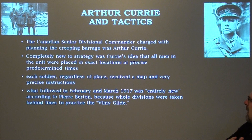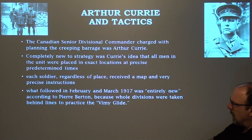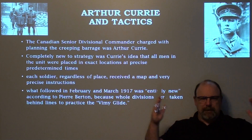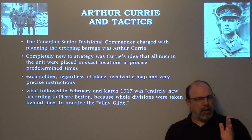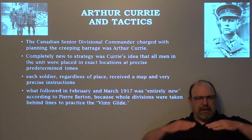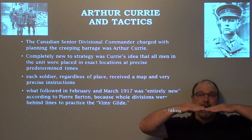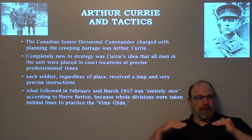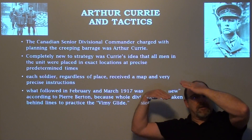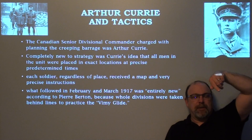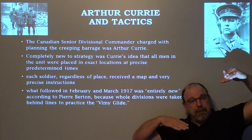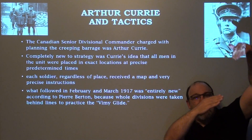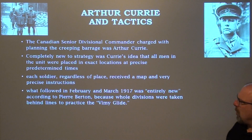In February and March 1917, what followed was entirely new. According to Pierre Berton, whole divisions were taken behind lines to practice what came to be known as the Vimy Glide. With four divisions lined up across the width of Vimy Ridge, instead of all troops going over the top simultaneously, the plan was for Division One to advance first, then the second, then the third — sweeping in sequence. The Germans on top, seeing troops flanking from one side, would shift to confront them — exposing themselves as the other divisions swept up. It was like a glide, and it was a huge part of the success of the battle.